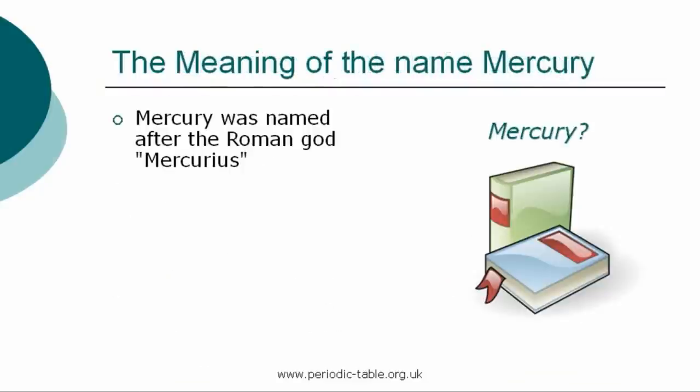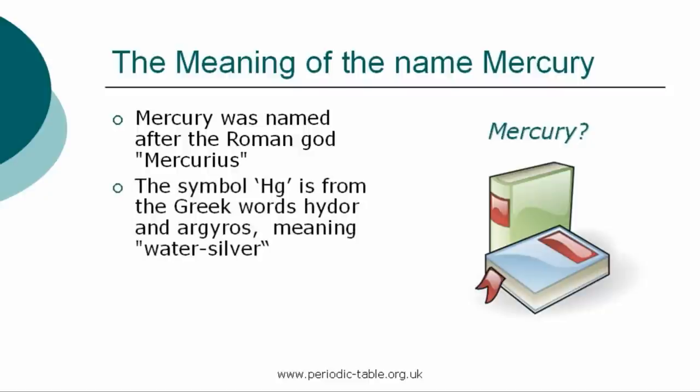Mercury was named after the Roman god Mercurius, the messenger of Jupiter, who was the god of commerce. The Latin word mercurius is thought to have derived from the Latin mercs, meaning merchandise. The symbol Hg is from the Greek words hydor and argairos, meaning water-silver, because it is a liquid like water and has a silvery metallic sheen.